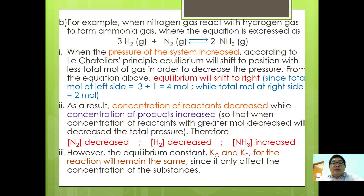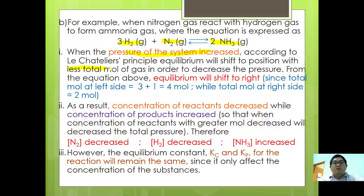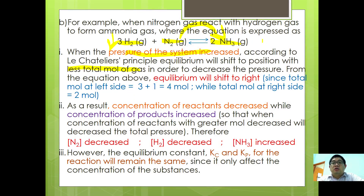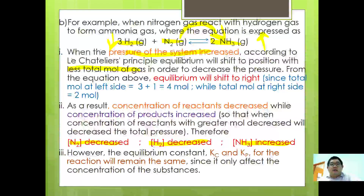For 3H2 + N2 → 2NH3: when pressure increases, equilibrium shifts to the right since the right side has fewer total moles of gas (2 moles vs. 4 moles on the left). As a result, [N2] and [H2] decrease while [NH3] increases. However, the equilibrium constants Kc and Kp remain unchanged, since pressure changes only affect the concentrations of substances involved.